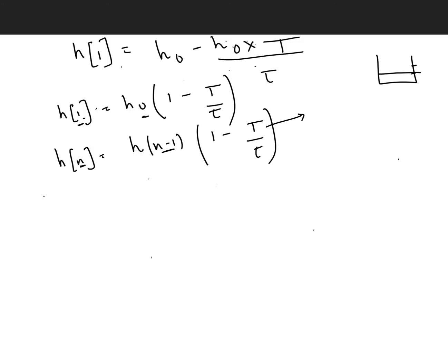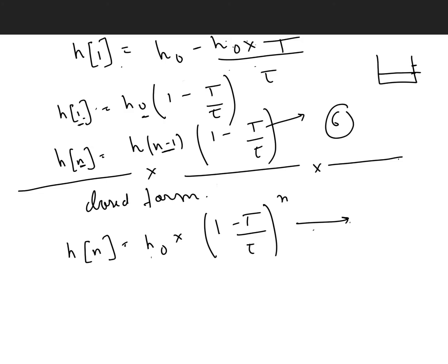So this is our final equation. If I have to convert this equation, if I have to bring this equation to a closed form, it actually becomes h[n] equals h0 times (1 minus capital T over constant τ) raised to the power of n. That becomes the generic equation or the solution to our problem statement.